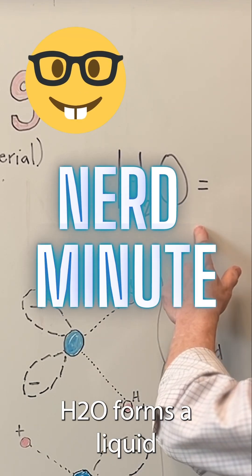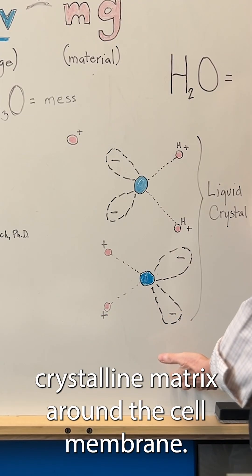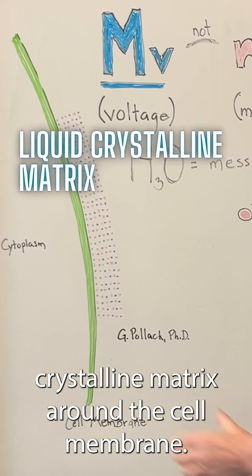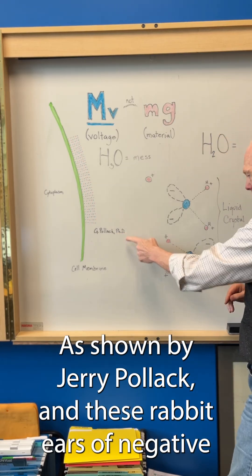Water, H2O, forms a liquid crystalline matrix around the cell membrane, as shown by Jerry Pollack.